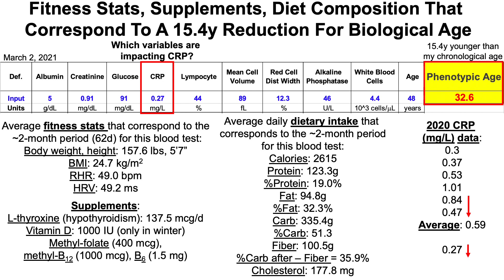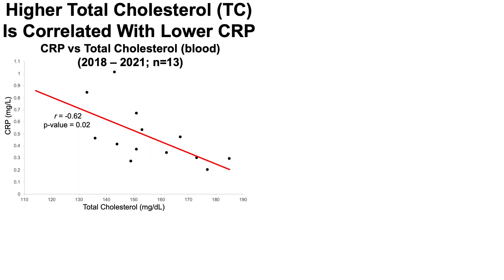Which variables are impacting CRP? I think dietary cholesterol may be a key player in the story. This is data for blood cholesterol — total cholesterol is correlated with lower CRP. We have CRP on the y-axis and my blood levels of total cholesterol on the x-axis. The higher my total cholesterol in blood, the lower my levels of CRP, and that's a significant correlation — within my range of 133 to 185. Others may have different data, but I think we can all replicate the approach to identify the best food pattern that optimizes our biomarkers with the goal of minimizing disease risk and maximizing longevity.